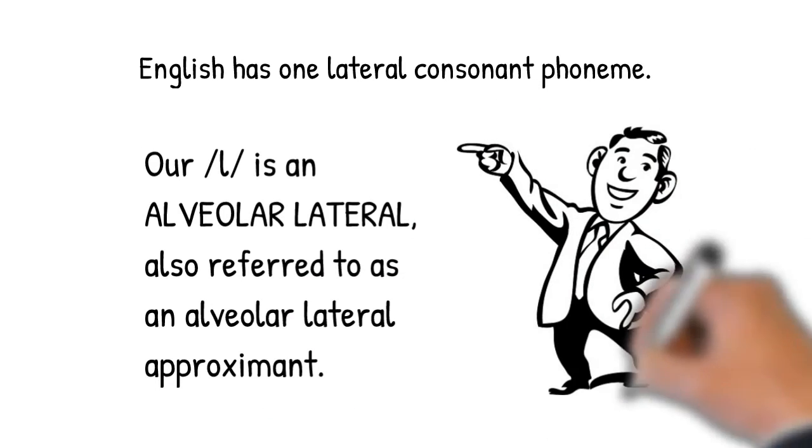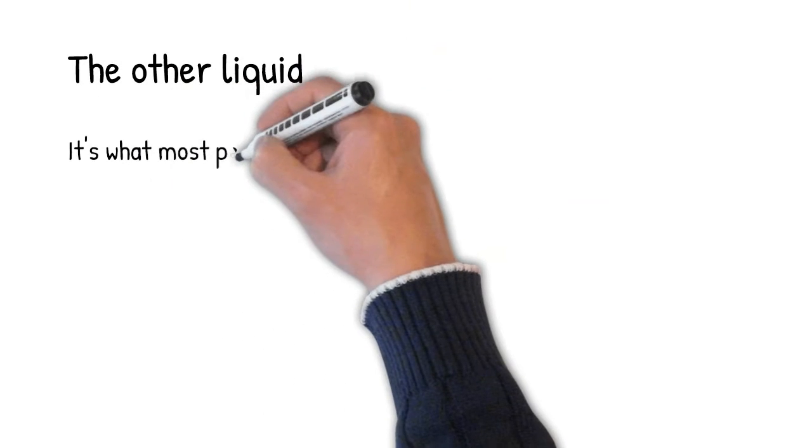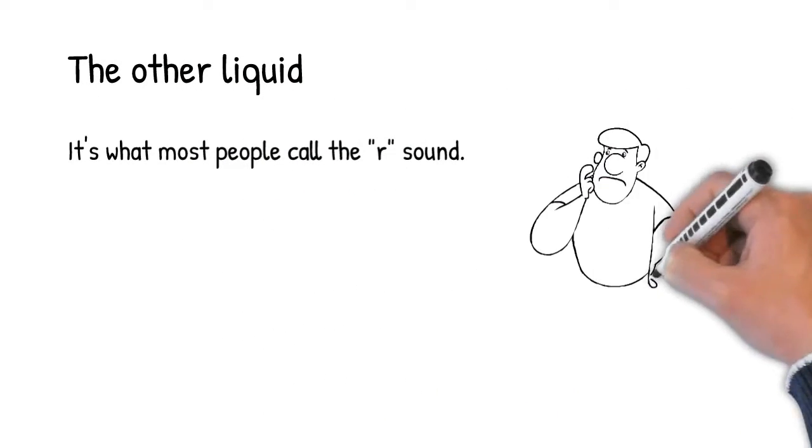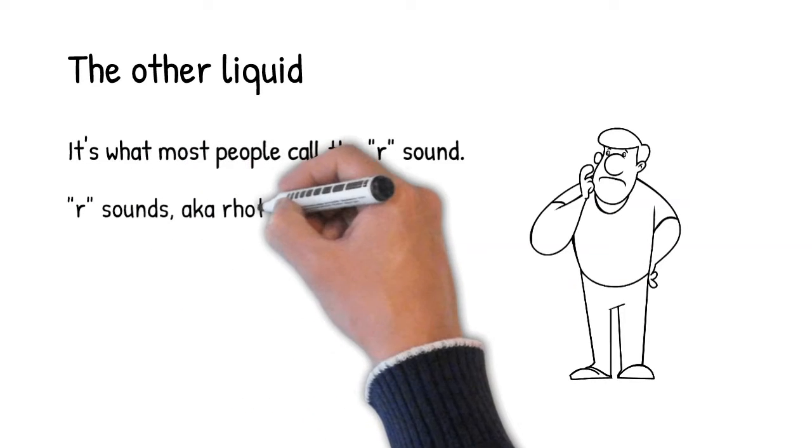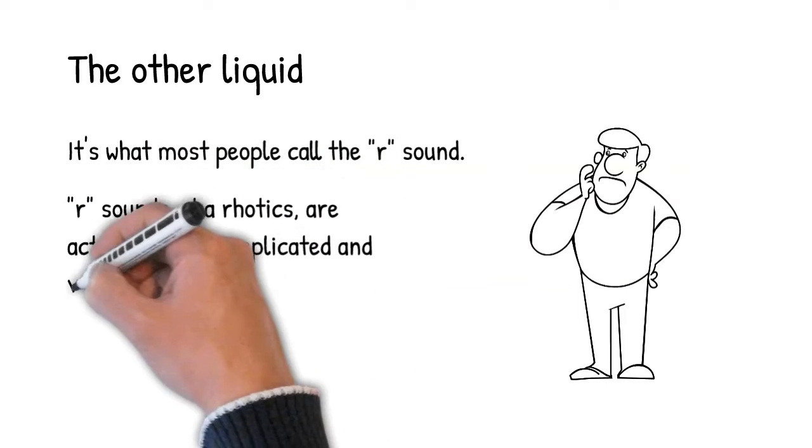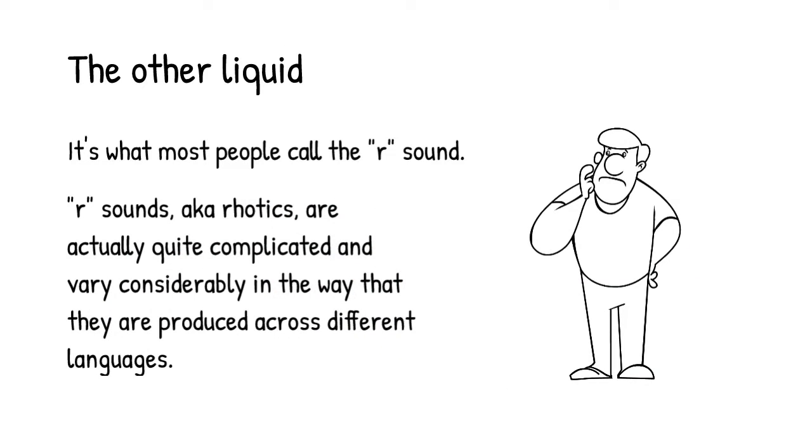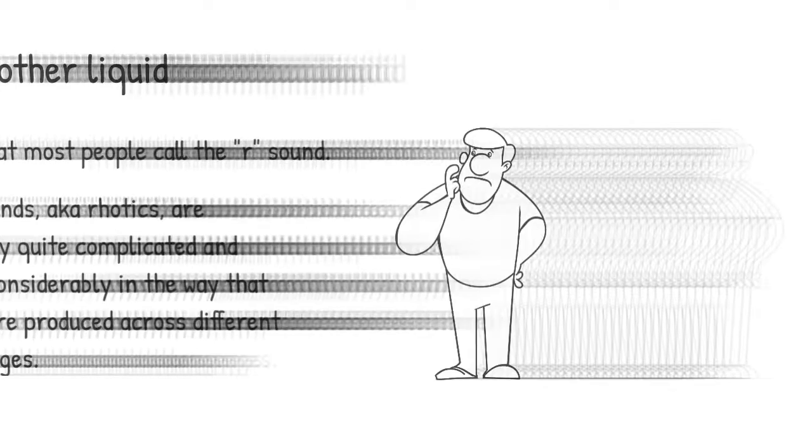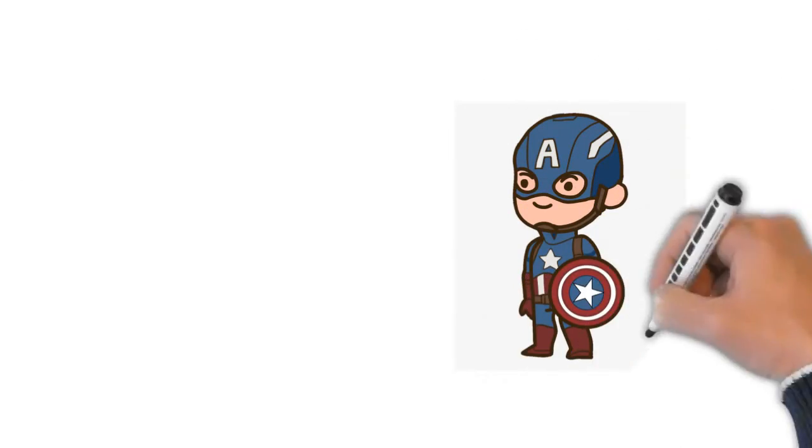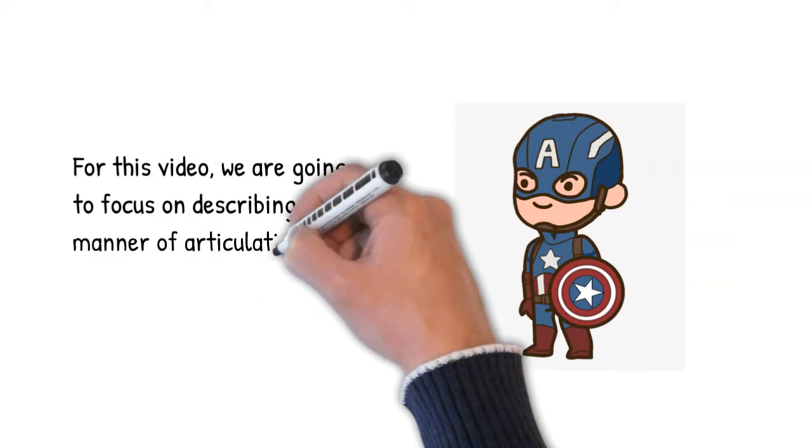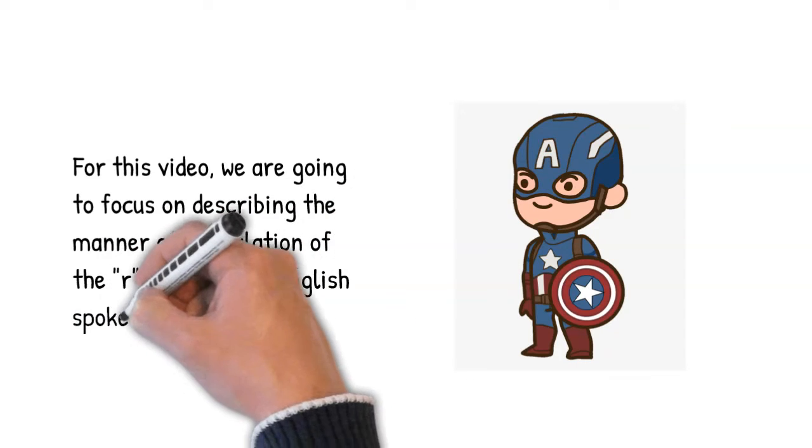The other liquid consonant that we have in English is what most people refer to as the R sound. R sounds, which are also called rhotics in linguistics, are actually quite complicated, and they vary a lot in the way that they're produced across different languages. For the purposes of this video, we're going to keep it simple. And by simple, I mean that we'll limit our attention to the R sound that we hear in American English, as opposed to doing a deep dive into the many R sounds across the world's languages.